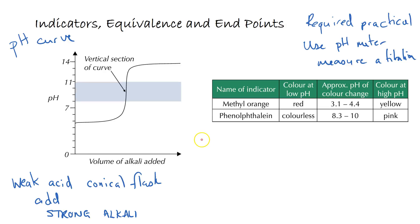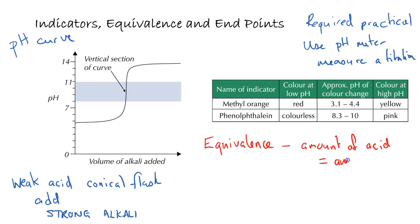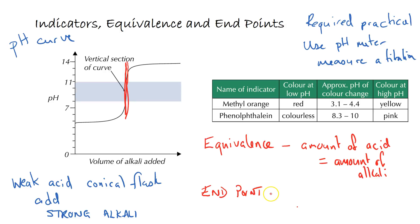Some important terms. We have the equivalence point — this is the point at which we've added the same amount of acid as an equivalent amount of alkali, so the amount of acid equals the amount of alkali added. The equivalence point can be seen on our pH curve as the sharp change in pH, almost a vertical line. What we want is for the indicator to change colour over this region.